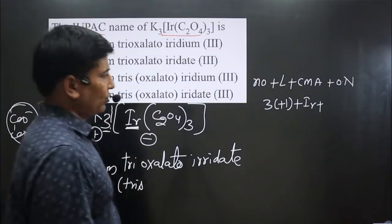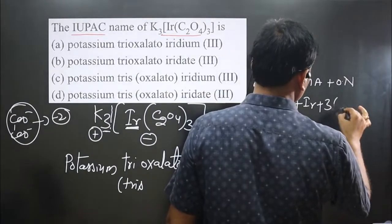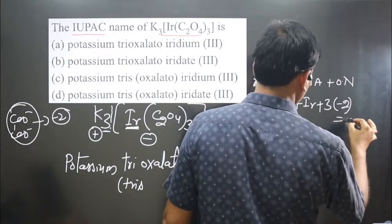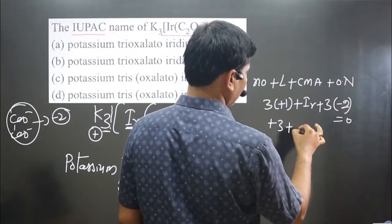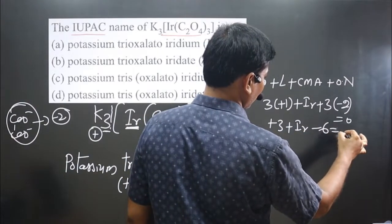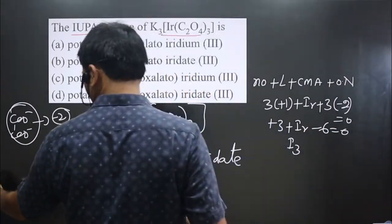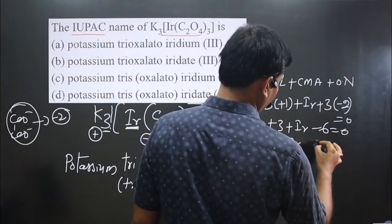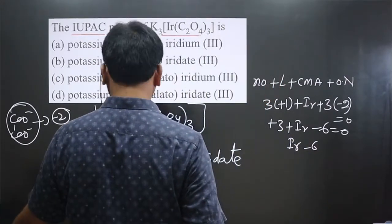Simplify: +3 for iridium, -6 equals zero. Then iridium—sorry, this is iridium—minus three will be there, -3 equals zero.